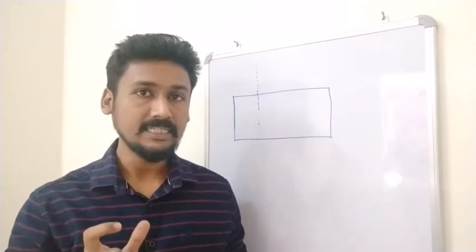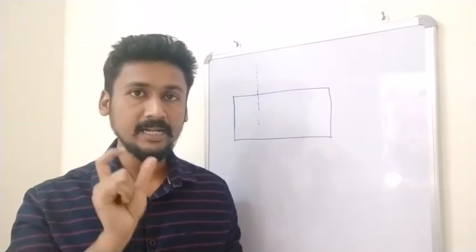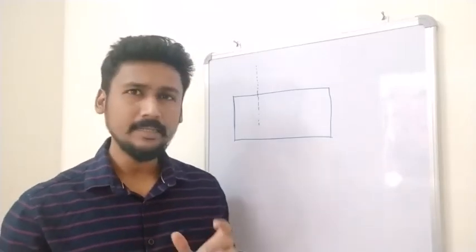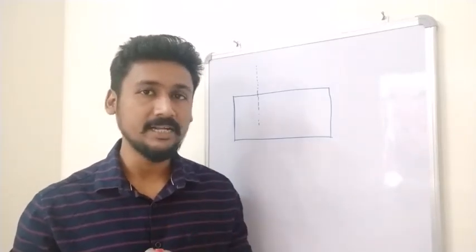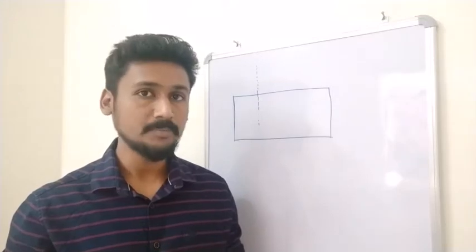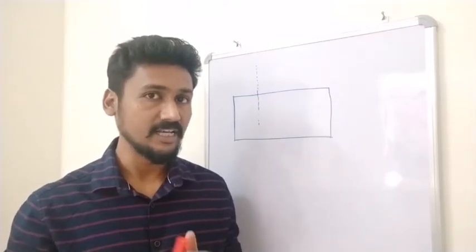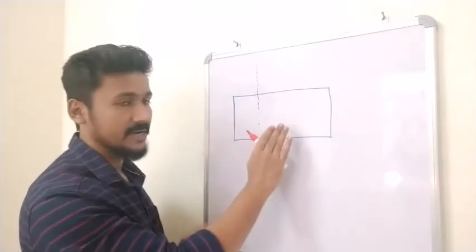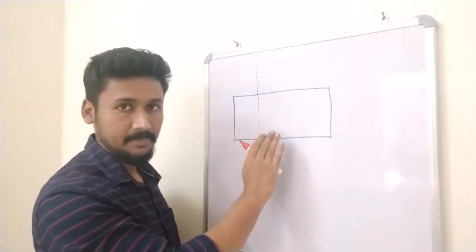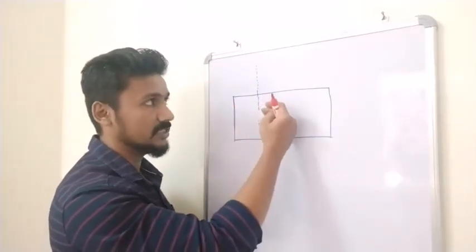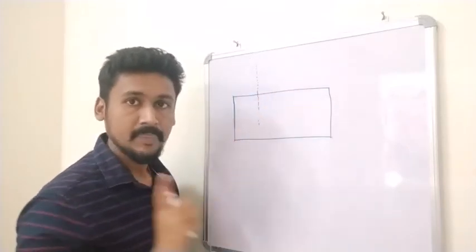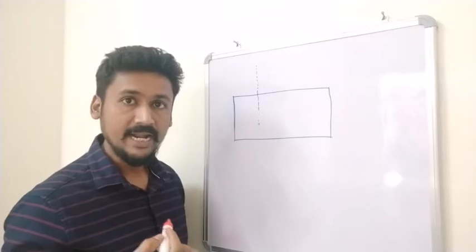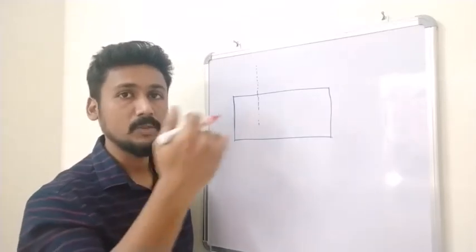Next, we discuss Total Internal Reflection, or TIR. You may remember we spoke about TIR when studying rainbow formation. Here is the phenomenon: we have a dense medium (glass) from which a ray of light passes to a rarer medium (air). TIR will only take place when light moves from a denser medium to a rarer medium.